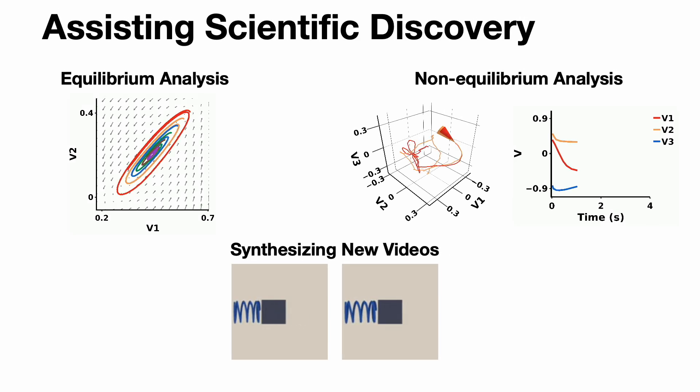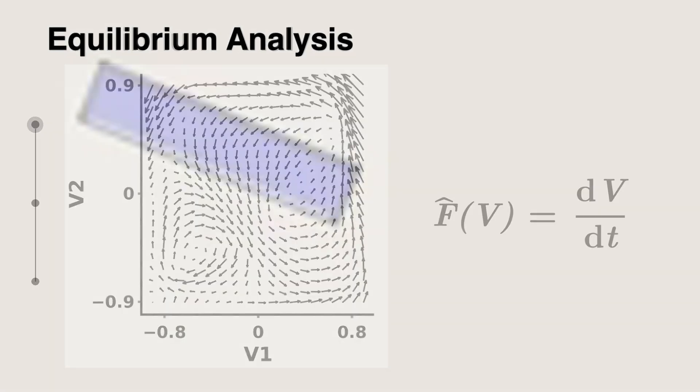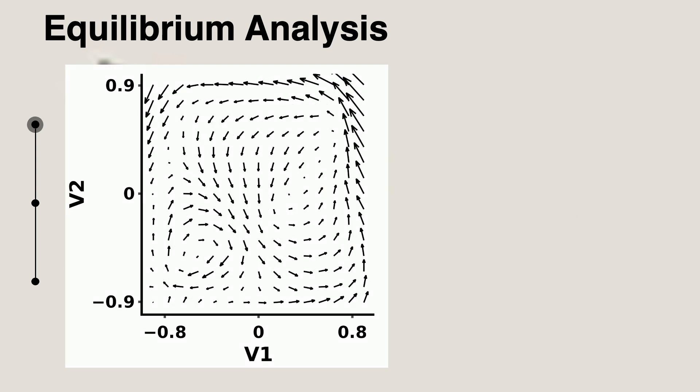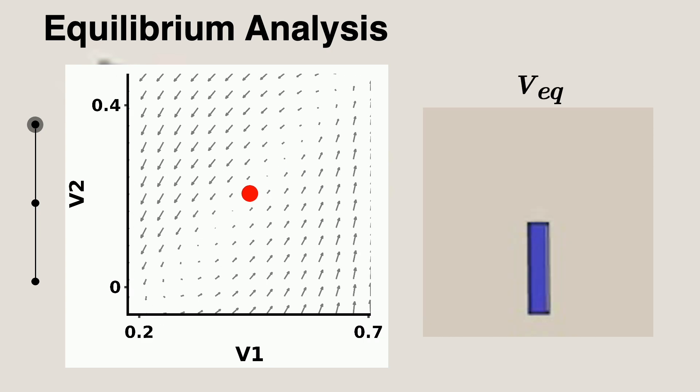Next, we will demonstrate the various scientific discovery tasks made possible through these representations. Our discovered neural state vector field captures the system's dynamics similar to traditional equations of motion. This allows us to use a simple root-finding algorithm to automatically identify the equilibrium states of the system.